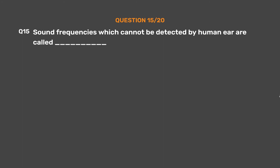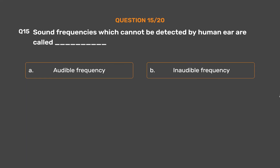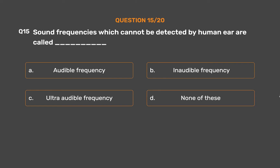Question number 15. Sound frequencies which cannot be detected by human ear are called underscore. Option A, Audible frequency; Option B, Inaudible frequency; Option C, Ultra audible frequency; Option D, None of these.